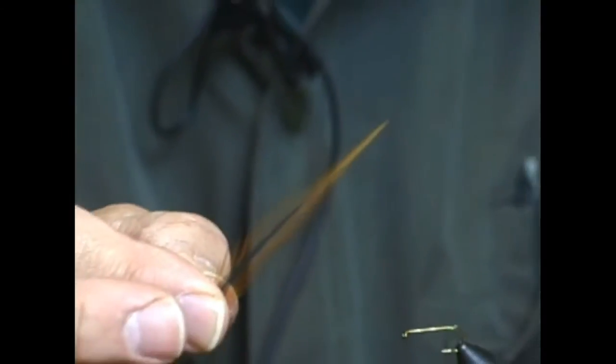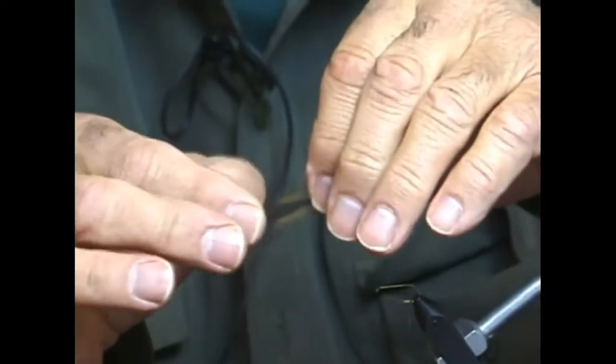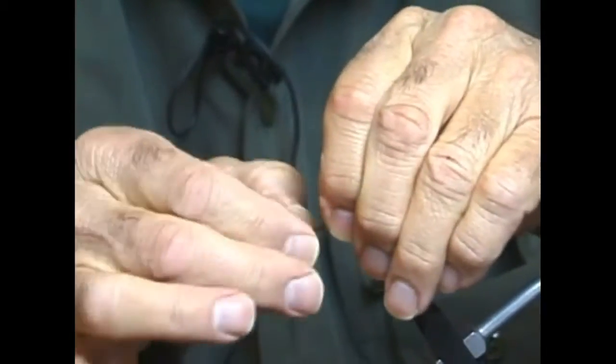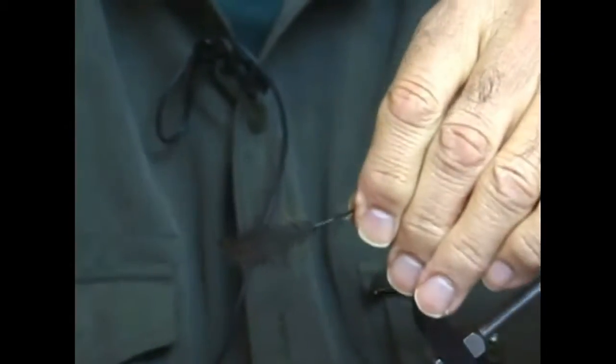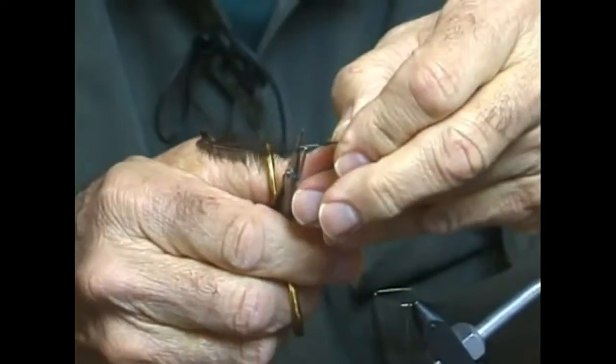I'm going to select a furnace saddle hackle which is a ginger hackle with a black stripe down the middle. I'm going to prepare it by moving the feather fibers about two and a quarter inches down the hackle and clip the waste off.